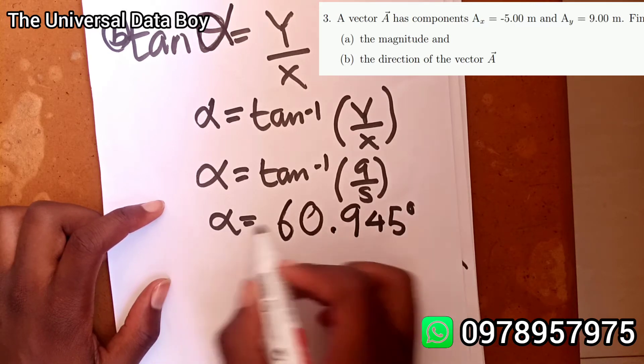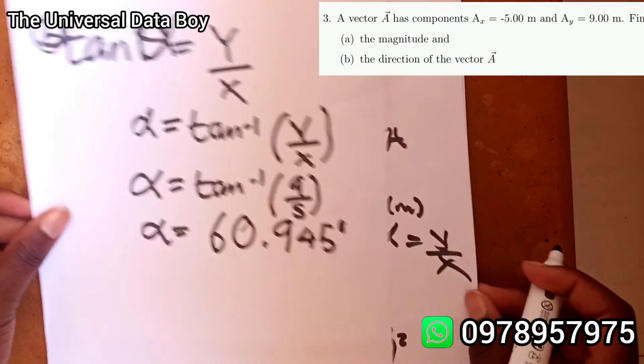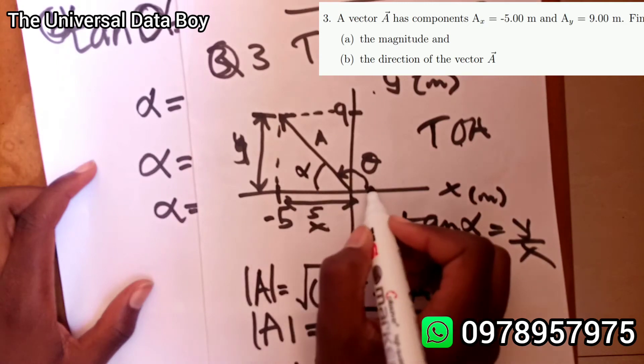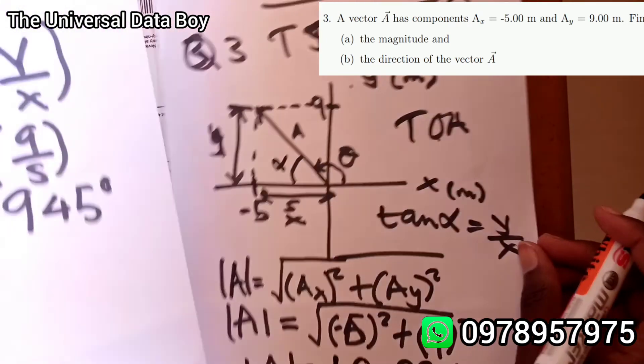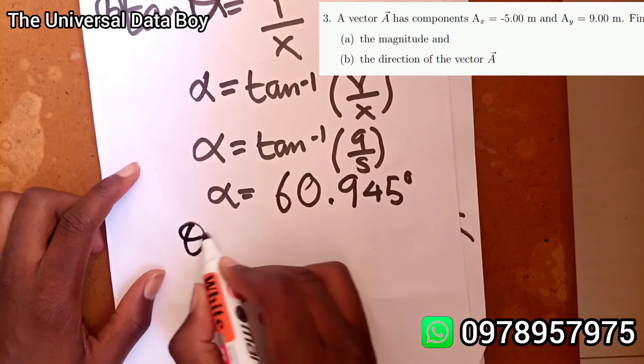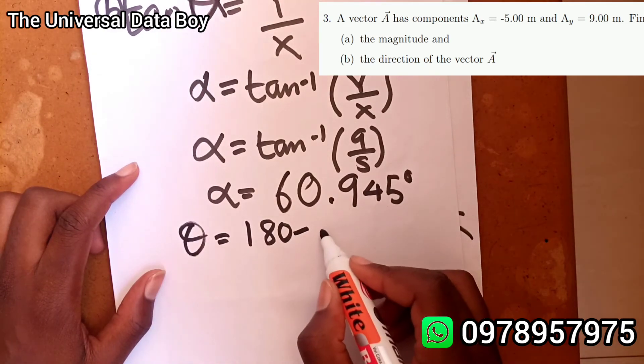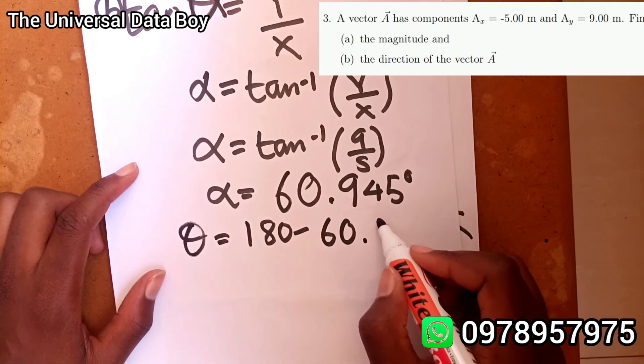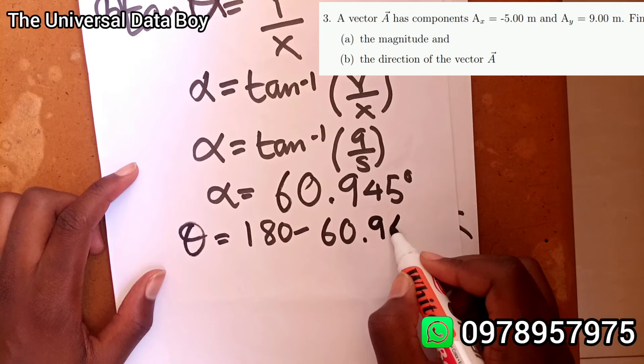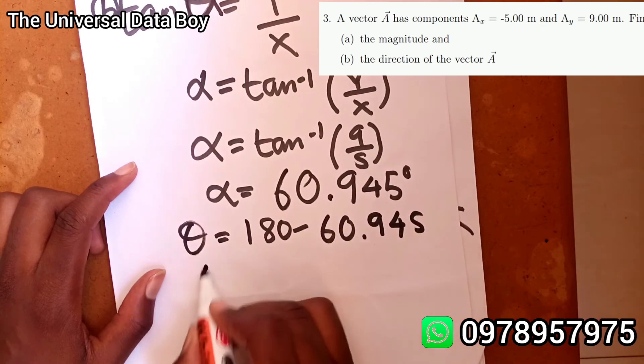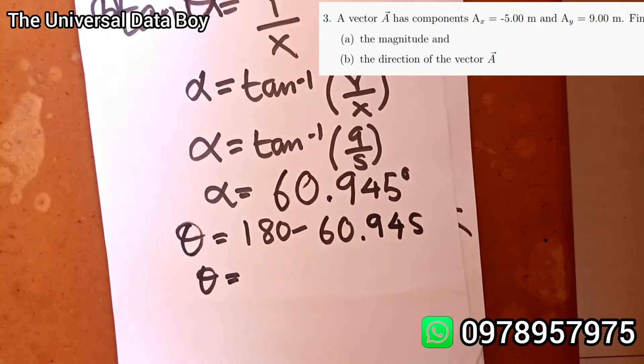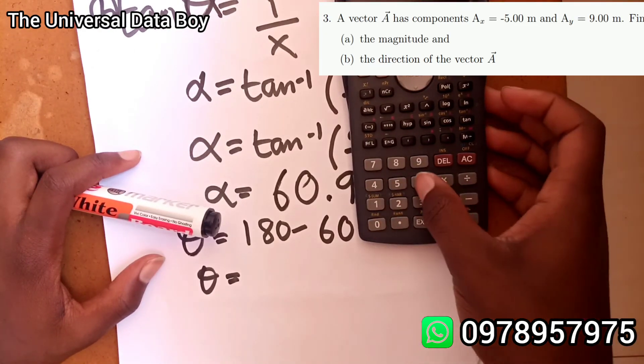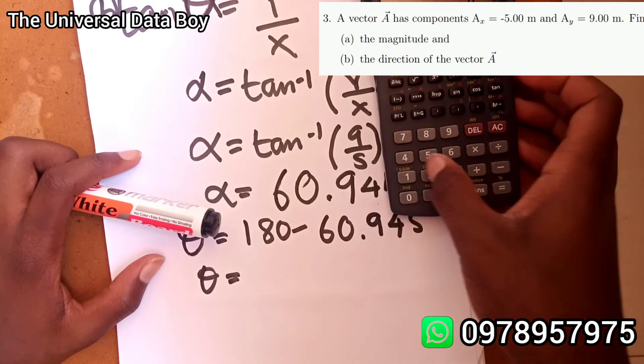To find theta, remember alpha is this one, theta is this one. We have a straight line here, a straight line, we know it's 180. To find theta we're going to say theta equals 180 minus 60.945 depending on whatever significant figures you've been told in the question. So I've got 180 minus 60.945.